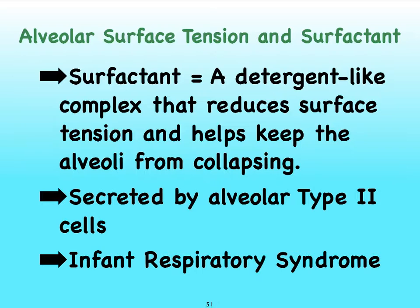Surface tension cannot be so strong that the alveoli cannot expand to bring in fresh air. The type 2 cells in the wall of the alveoli secrete a detergent-like chemical called surfactant, which reduces the surface tension in the alveoli by reducing cohesive forces between water molecules. Babies born prematurely do not produce enough surfactant because their lungs haven't finished developing, so surfactant is often sprayed directly into the lungs of preemies.